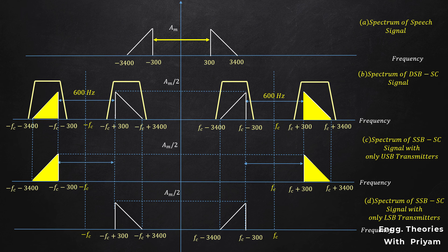Rather than using one stage, we will use two stages of modulation to obtain an SSBSC modulated speech signal with a carrier frequency over 1 MHz. We will see this method of modulation in the next lecture.